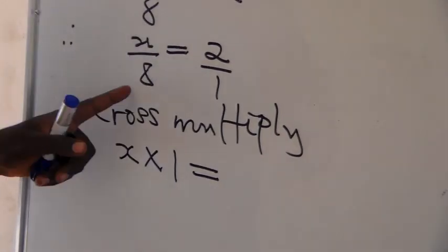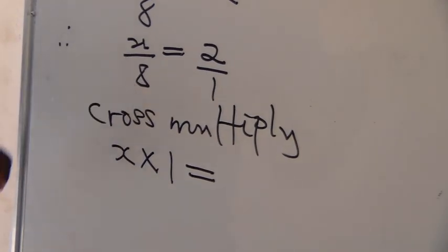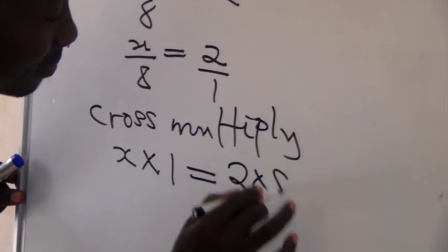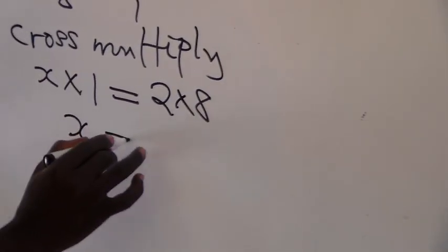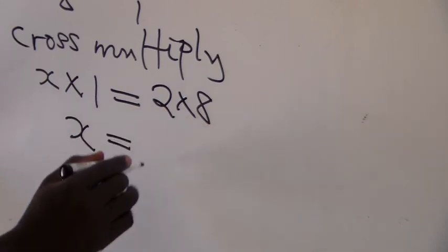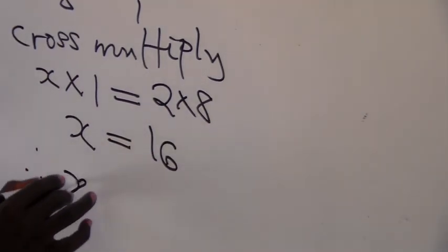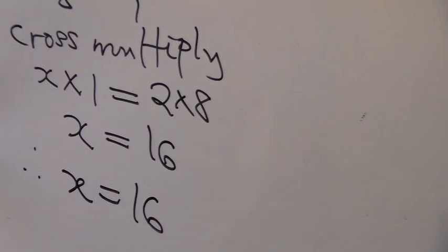And then on the right-hand side, the numerator 2 is multiplied by the denominator on the left-hand side, giving us 2 multiplied by 8. Now x multiplied by 1 gives us x, because 1 is a unity. And 2 multiplied by 8 gives us 16. That means the value of x is equal to 16.